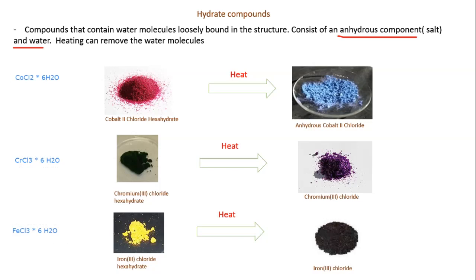The number of water molecules varies by compound — it could be 2, 4, 5, or 6. For most transition metal hydrates, the hydrate and anhydrous forms have different colors. Cobalt(II) chloride hexahydrate is magenta; when heated long enough, it turns blue — the anhydrous form. Chromium(III) chloride hexahydrate is dark green; the anhydrous form is purple. Iron(III) chloride hexahydrate is yellow; the anhydrous form is dark gray.